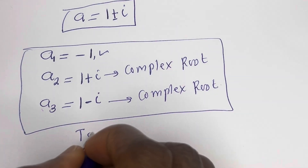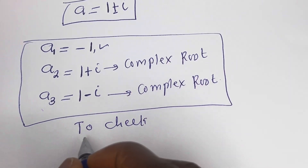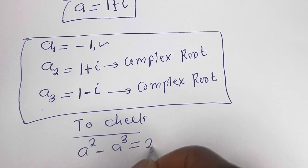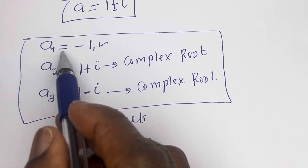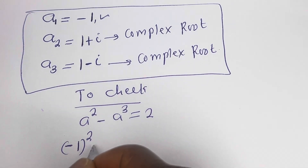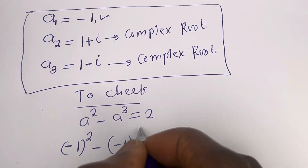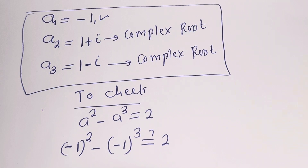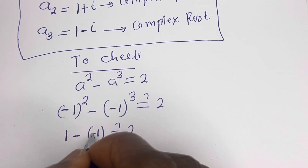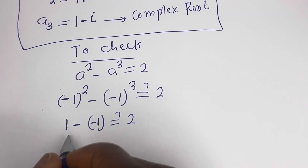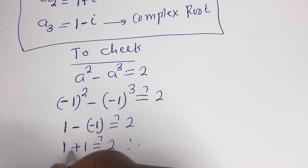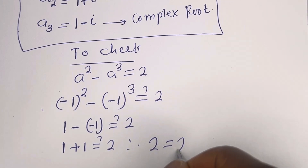We may check to confirm if this answer is correct. Using the real root, the given equation is a squared minus a to the power of 3 equals 2. Substituting a equals minus 1: minus 1 squared minus bracket minus 1 to the power of 3 equals 1 minus bracket minus 1 equals 1 plus 1 equals 2, which equals the right-hand side. This is true.